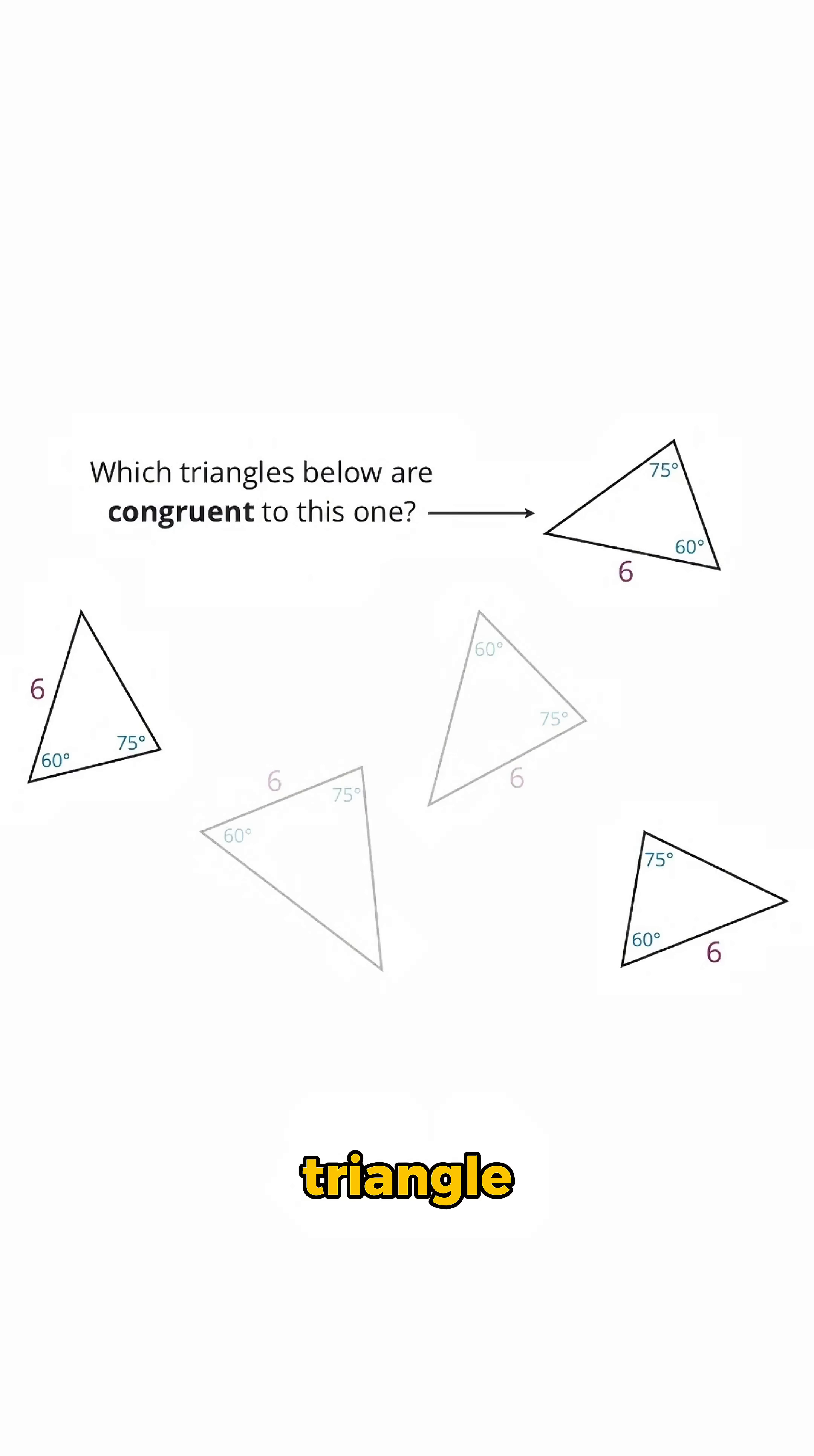Nicely done! Going around this triangle, we have a side of length 6, a 60 degree angle, and a 75 degree angle. So does this triangle: 6, 60 degrees, 75 degrees, so it must be congruent. And this triangle is also congruent, and we can see that by flipping it around.